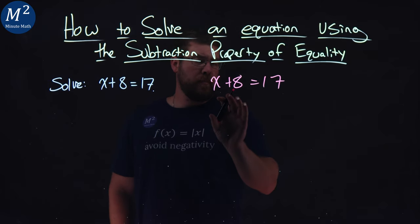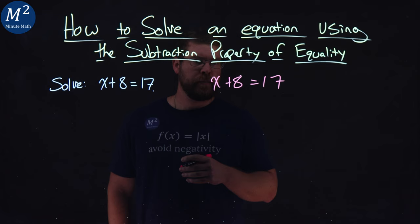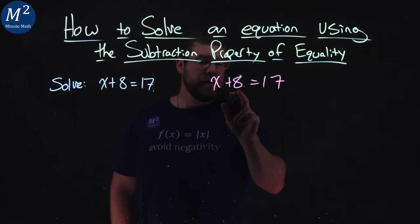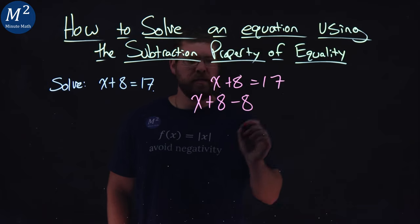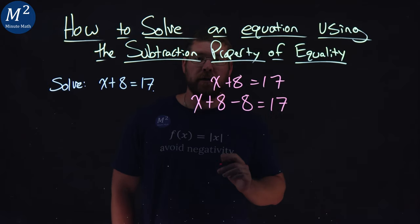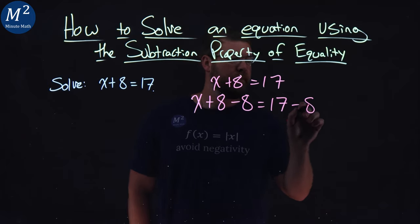Well, subtraction property of equality says we can subtract a number to both sides of the equation. So to eliminate this 8, I'm going to rewrite this as x plus 8 minus 8, but I have to do it to both sides. 17 minus the 8.